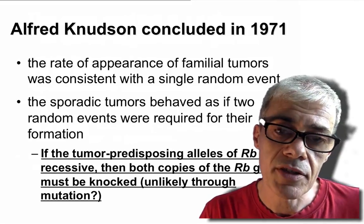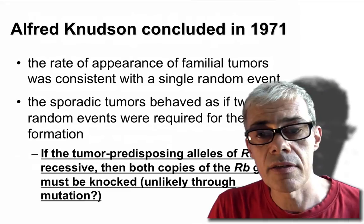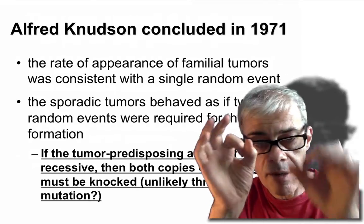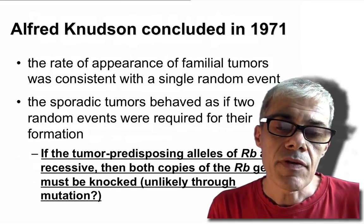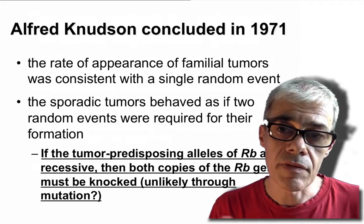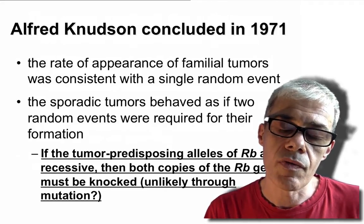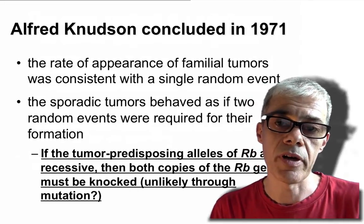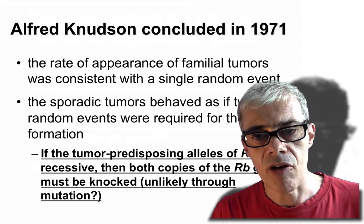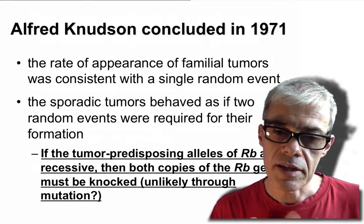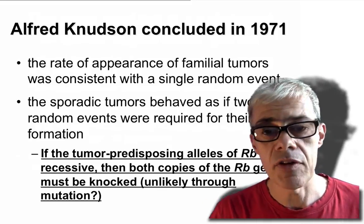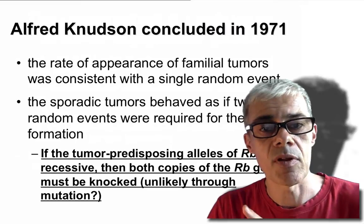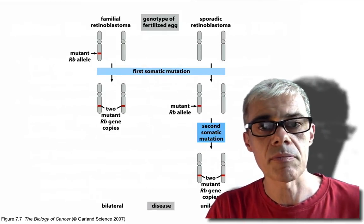He was studying retinoblastoma, a cancer of the eye that occurs in newborn infants and children. There are two types: unilateral (one eye) and bilateral (two eyes). If there's a family history, the occurrence is consistent with a single random mutation knocking out the good copy, because you've inherited a bad copy. If it's a sporadic occurrence, you've got to knock out both copies — which is much more unlikely — and you tend to have unilateral retinoblastoma, because it only occurs in one group of cells rather than all cells being affected.